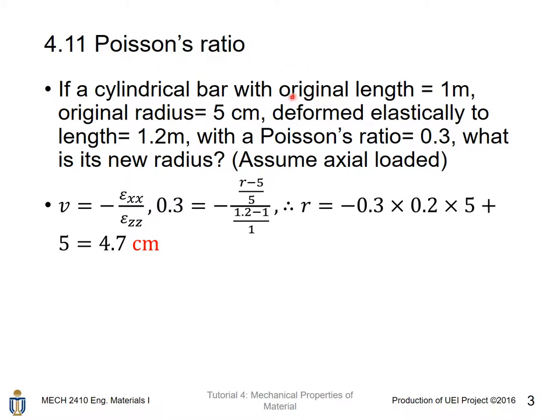If a string is drawn with original length equal to 1 m, original radius equal to 5 cm, deformed elastically to a length equal to 1.2 m, with a Poisson's ratio equal to 0.3, what is its new radius? Assume axially loaded.